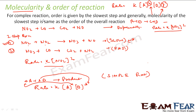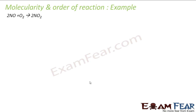So for the complex reaction, we find the slowest step, and the molecularity of the slowest step is nothing but the order of the overall reaction. You can see the molecularity of the slowest step is two because there are two NO2 molecules reacting, and the order of the reaction is also two.